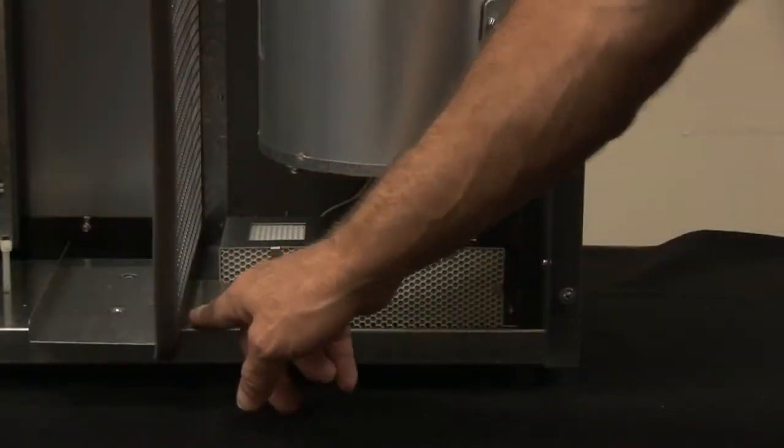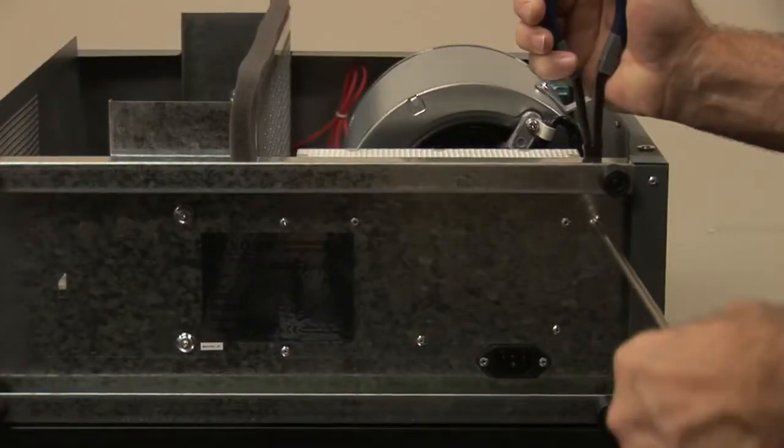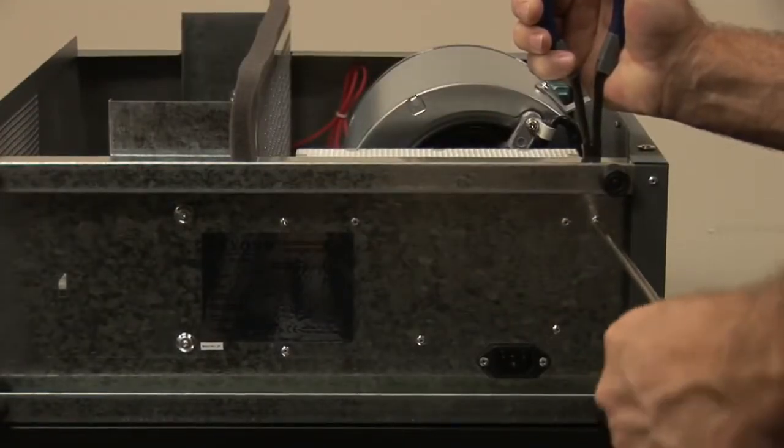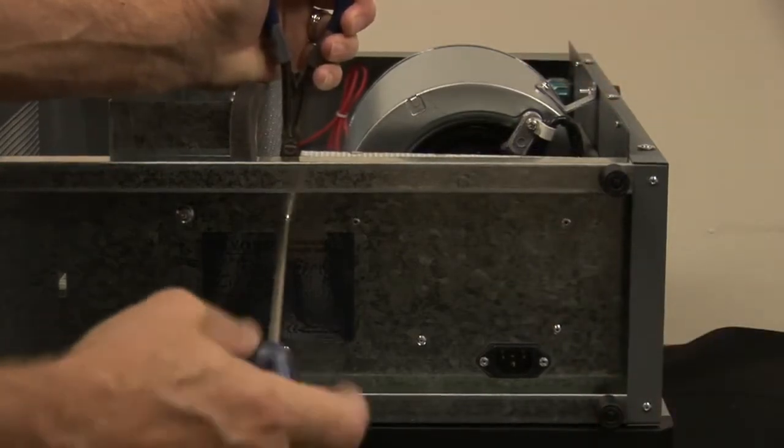Locate the two points where the honeycomb cover is secured. To remove the cover, first lay the guardian air on its back. Then while holding the nut with the needle nose pliers, loosen and remove the first cover screw. Repeat for the second cover screw.